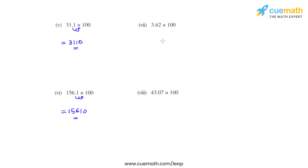Coming to the seventh bit, we have 3.62 multiplied with 100. The decimal will be moving two places towards the right, and the product that we get for the two numbers is 362.